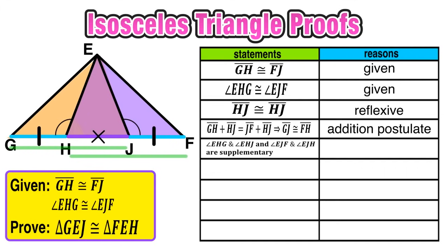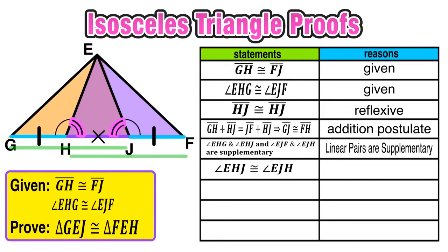The next thing we can do is identify some pairs of supplementary angles. Angle EHJ and angle EHG are supplementary — they're a linear pair. And angle EJF and angle EJH are also supplementary since they are a linear pair, and linear pairs form supplementary angles. With that in mind, we can say that angle EHJ is congruent to angle EJH. Remember it was given that angle EHG and angle EJF were congruent. If they were both 120 degrees, their supplements would both be 60 — when two angles are congruent their supplements must also be congruent. So angle EHJ is congruent to angle EJH because linear pairs of congruent angles are congruent.